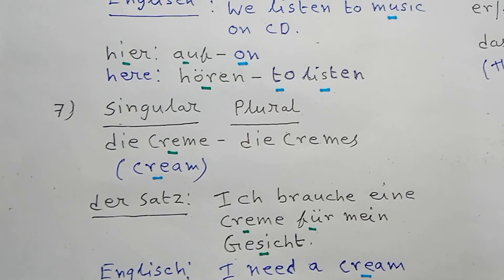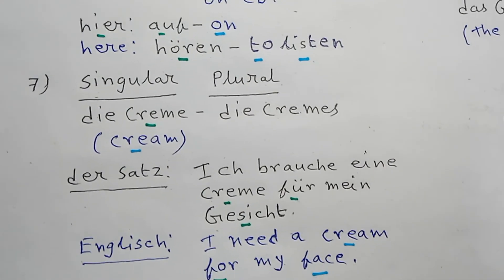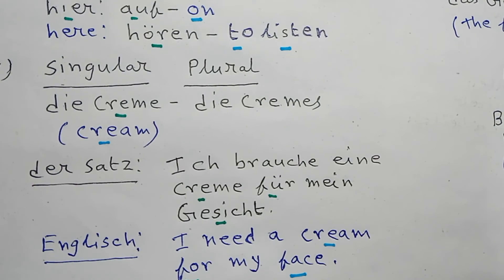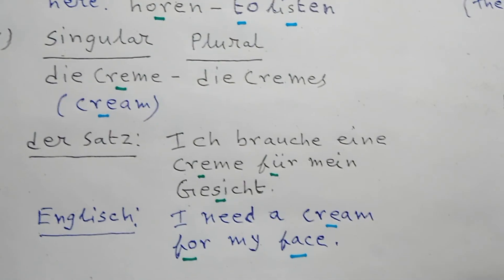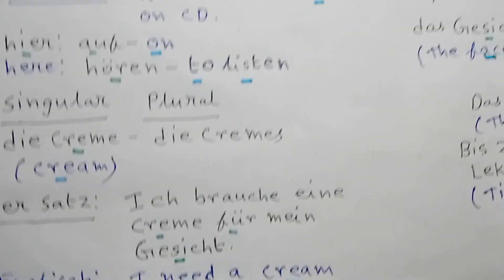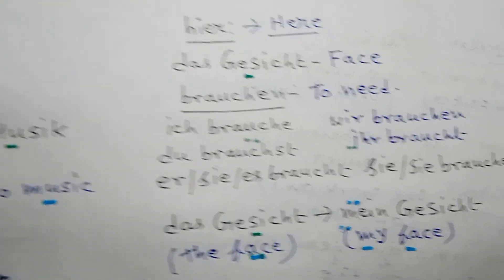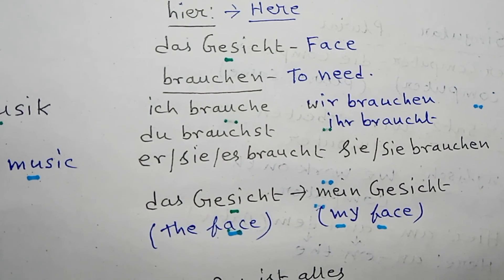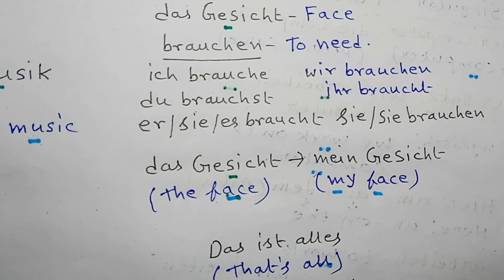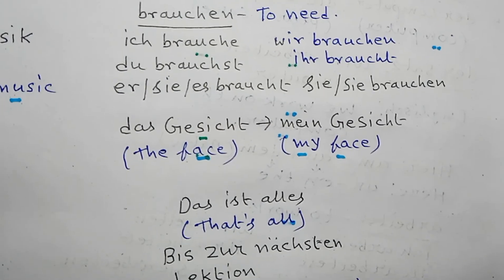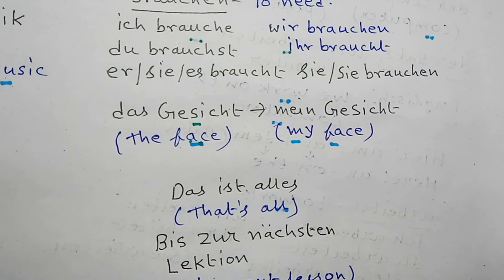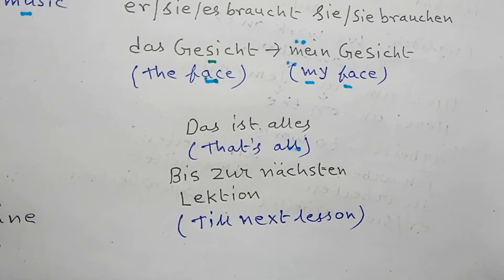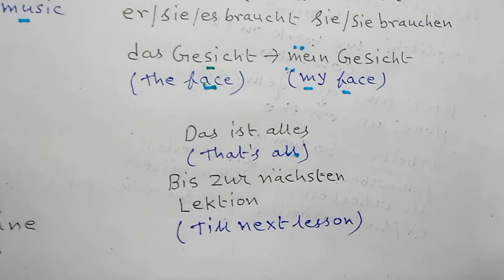Number seven: Die Creme, plural die Cremes. English meaning: cream. Now German sentence: Ich brauche eine Creme für mein Gesicht. English: I need a cream for my face. Here 'das Gesicht' means face, and 'brauchen' means 'to need'. Conjugation: ich brauche, du brauchst, er/sie/es braucht, wir brauchen, Sie brauchen (formal). Das ist alles. Bis zum nächsten Lektion. Thank you.